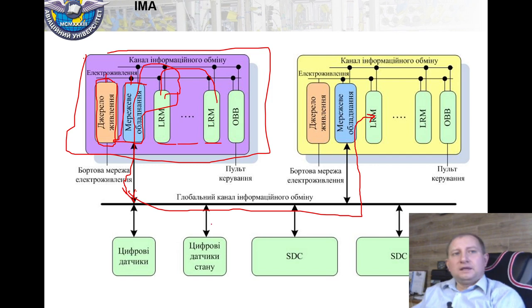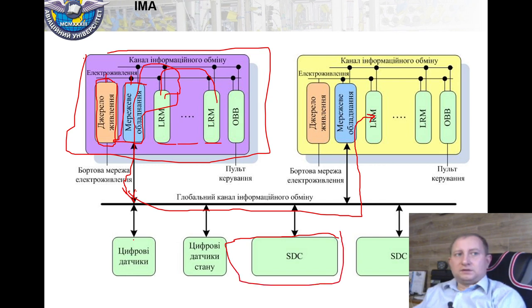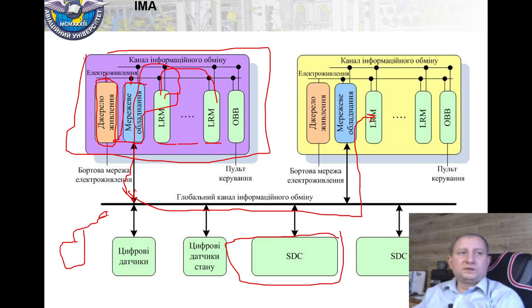Each LRM can use access via the local network and some multiplexing equipment to get access to the global digital data bus and ask for any parameter inside another integrated rack. This is a great idea which can increase the performance of the network equipment available on board. We can also use specific integrated racks called Signal Data Concentrators, and we can connect particular LRUs and sensors to this global database as well.